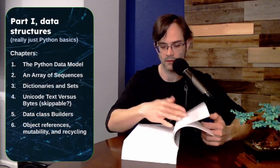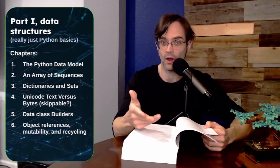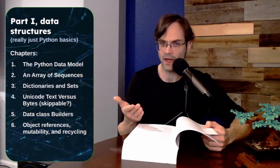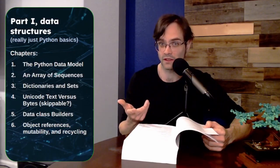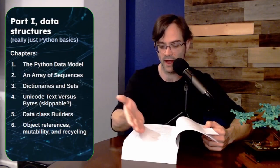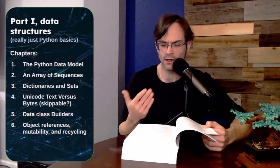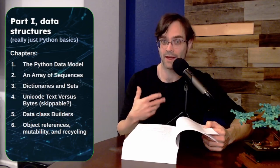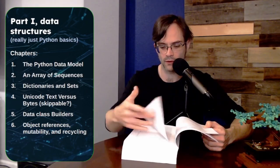For example, chapter three, dictionaries and sets, quite powerful, quite useful in Python, quite easy to use, but they have capabilities you may not know about. For example, I thought I knew dictionaries as well as you could know them, but I didn't know that chain map was a thing. Now I know. I didn't know too much about frozen sets. Now I know why you might use a frozen set over a normal set. So that was pretty useful.